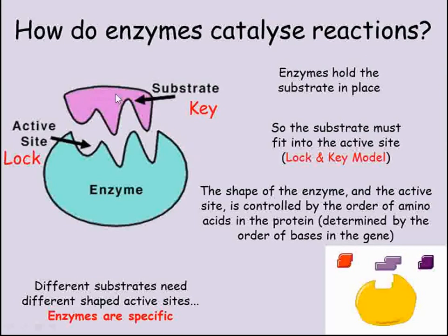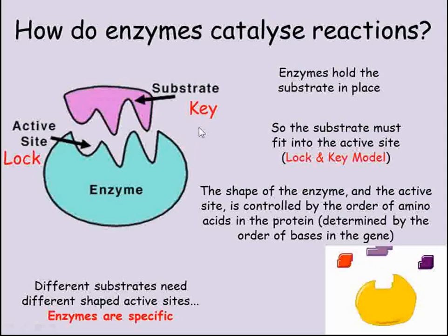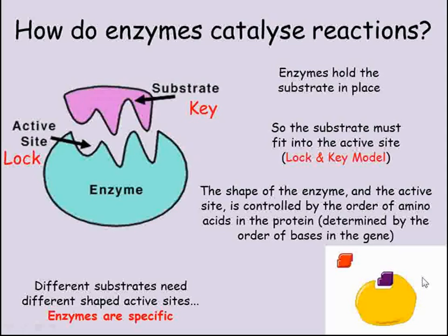They work by holding the substrate — which is the substance being altered — in place. The enzyme has a special region called an active site, and the substrate fits into the active site in the same way as a key fits into a lock. Because different substrates are different shapes, they're going to need different enzymes. This makes enzymes specific — each enzyme will only catalyse the reaction whose substrate fits its active site.